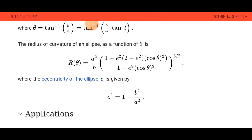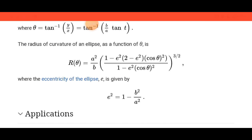Where e squared is equal to 1 minus b squared over a squared. That's all for today's video. Thank you.